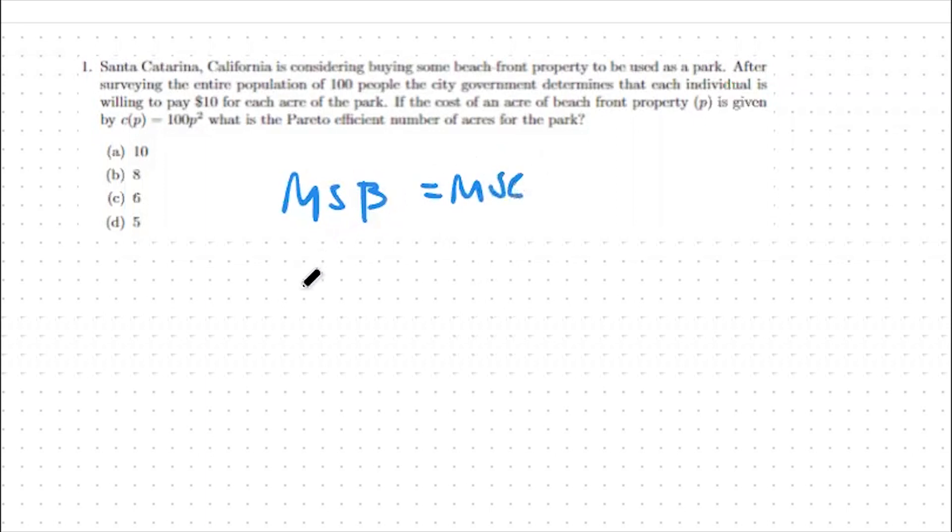The marginal social benefit is the benefit per unit that society gets from a public good, while the marginal social cost is the cost incurred by the society per unit that it provides.